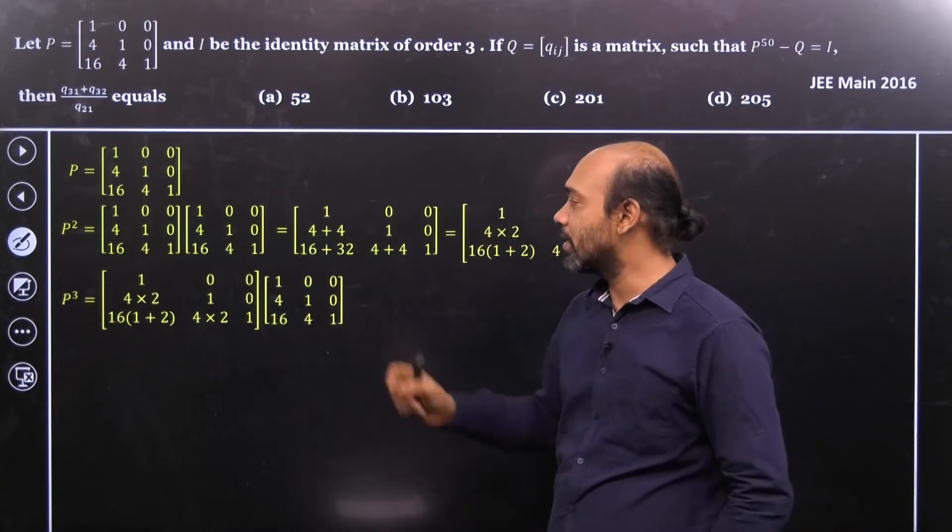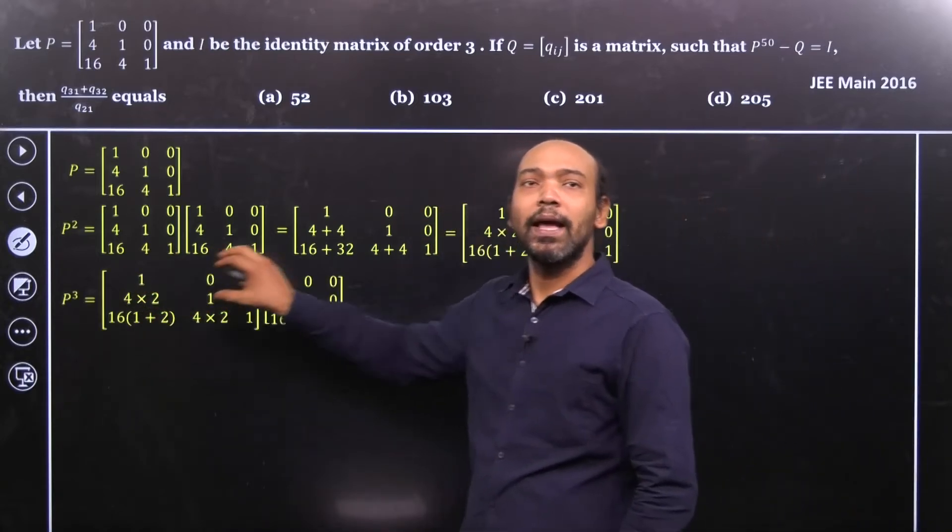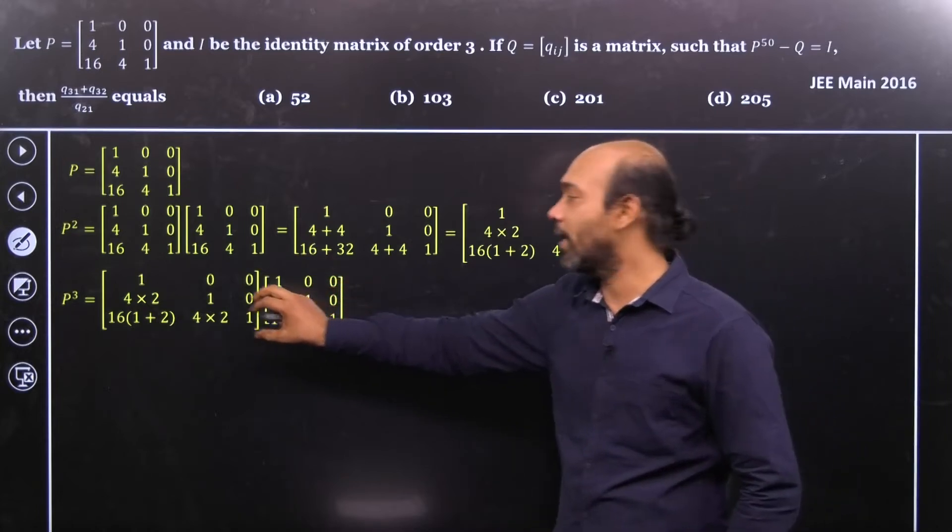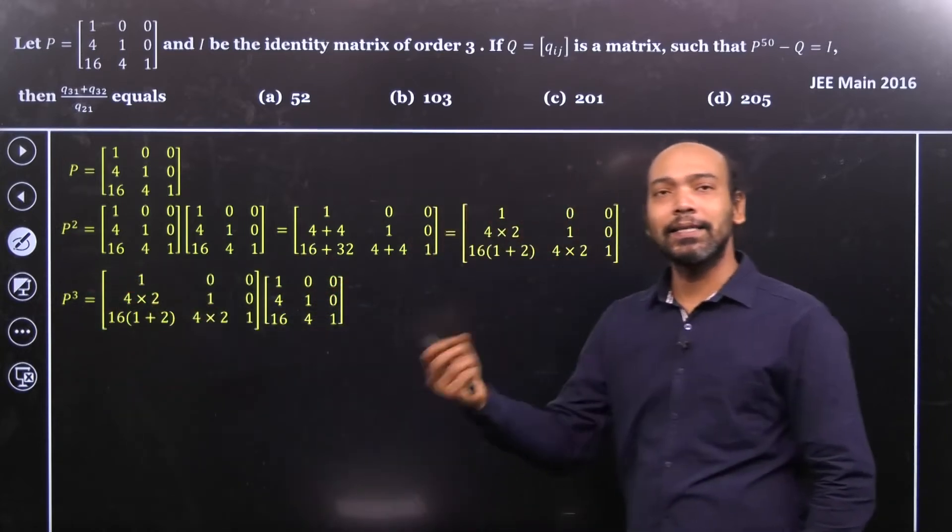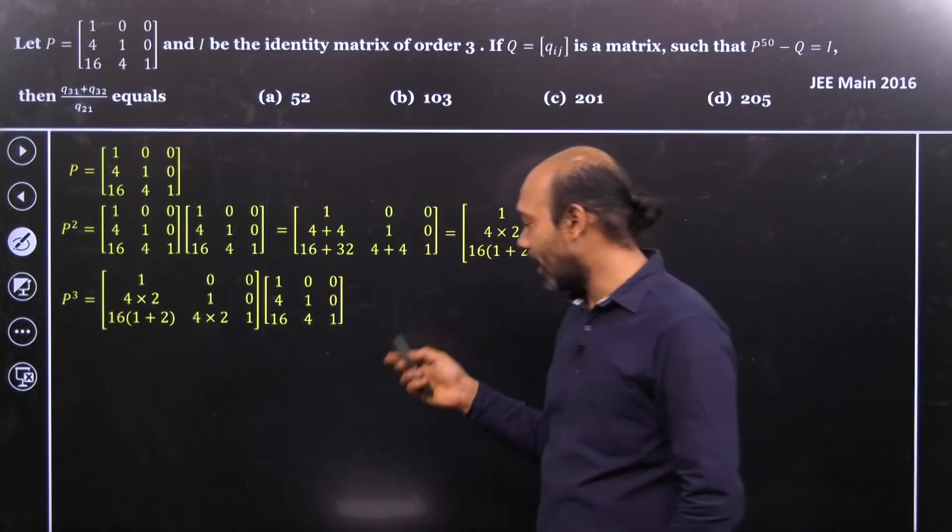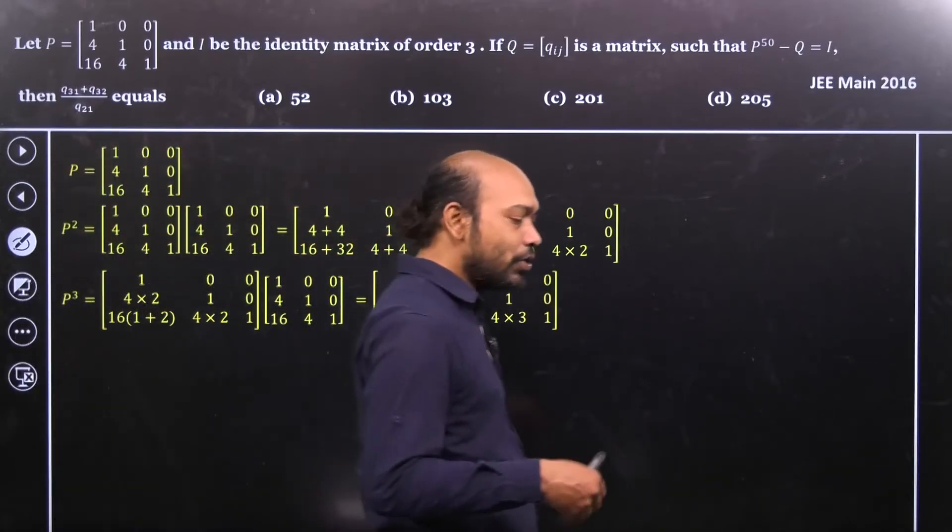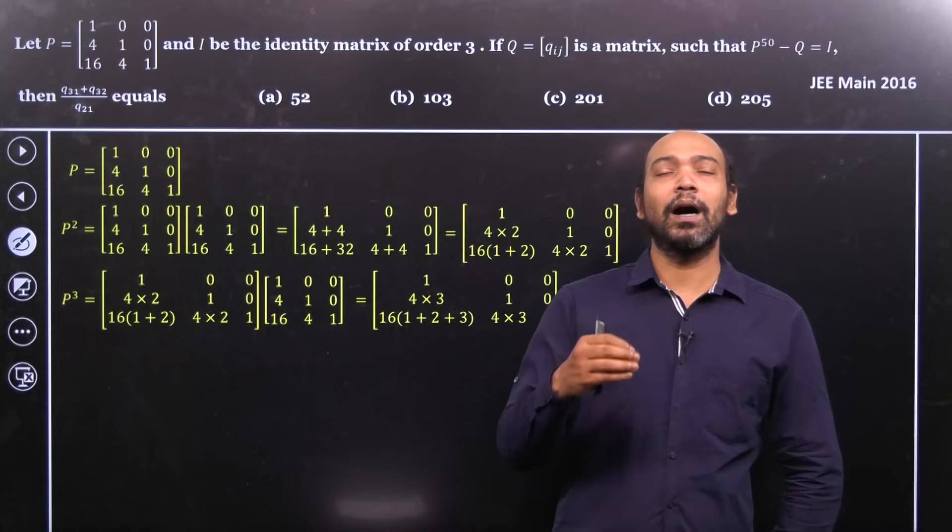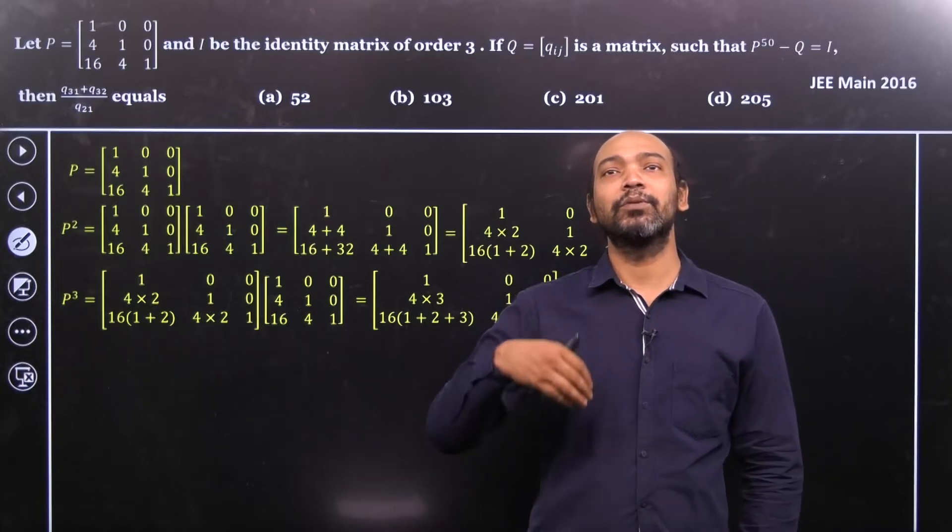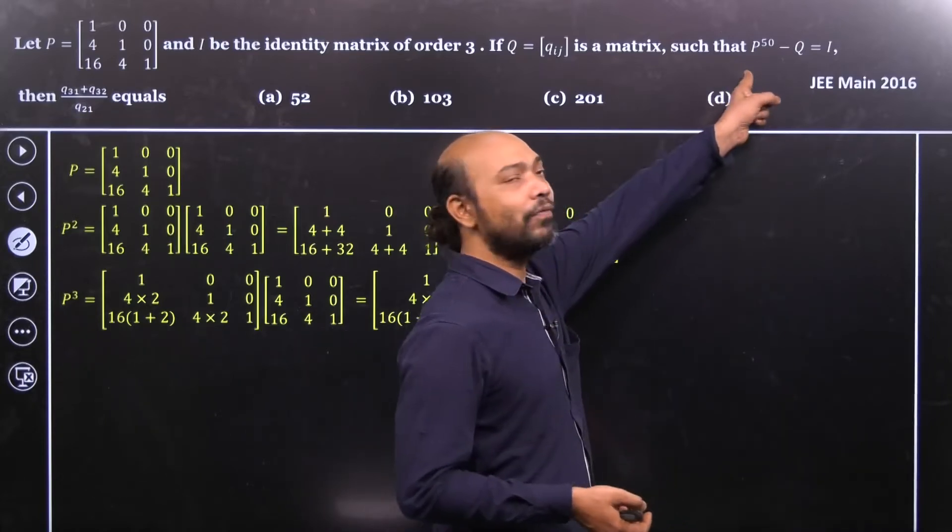So we consider that matrix P square. So we consider that P square and P multiplied, so we will get P cube. And let's go ahead. So if we go ahead and do the calculation, we will get that. The same thing, whatever we predicted. So our prediction technique holds good here. So that means it will hold good for P to the power 50 as well.